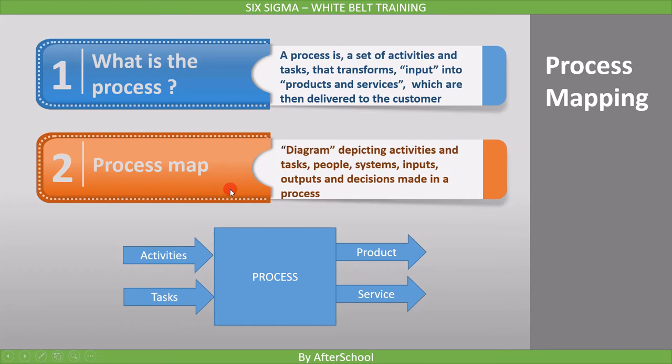A process map is a diagram depicting activities and tasks, people, systems, inputs, outputs, and decisions made in a process. By mapping our process, it's all about understanding and articulating how we deliver our services and products.